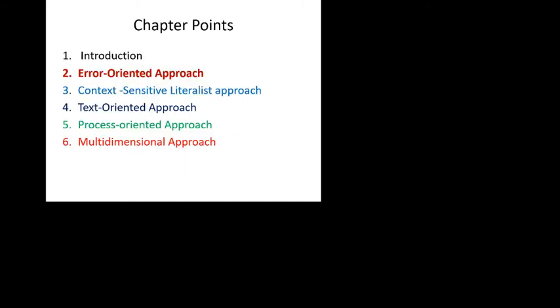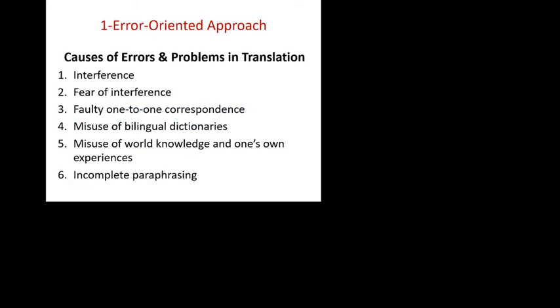Linking up with that — translation error — basically we are discussing the error-oriented approach. From there we went to the definition of error, and then we reached the point where we have some concept of error. The next point is the causes of errors and problems in translation. The researchers found these are the main causes: number one is interference, number two is fear of interference, number three is faulty one-to-one correspondence, number four is misuse of bilingual dictionaries, number five is misuse of world knowledge and one's own experiences.